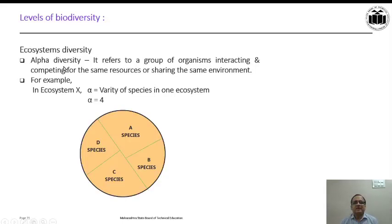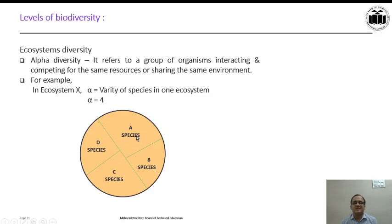Ecosystem diversity can be further classified as Alpha Diversity, Beta Diversity, and Gamma Diversity. Alpha diversity refers to a group of organisms interacting and competing for the same resources or sharing the same environment. For example, in ecosystem X, four species A, B, C, and D are all sharing and interacting in the same ecosystem. So alpha diversity equals the variety of species in one ecosystem; here there are four species, so alpha equals four.